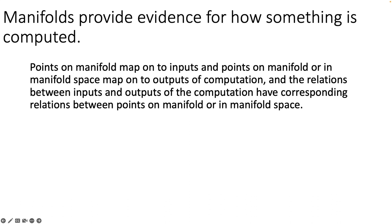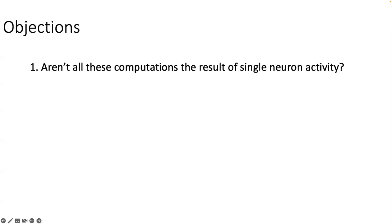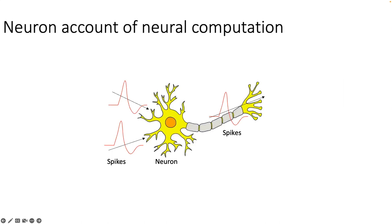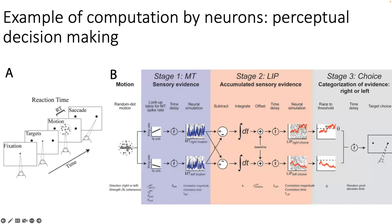Before diving deeper into homomorphisms, I want to defend this mapping as evidence for how something is computed, and address objections that reject any special role for manifolds. First, you might think these computations are merely the result of single neuron activity — that this evidence is no different from what can be gathered from understanding single neurons. On the single neuron account, input spikes from other neurons are received in the dendrites, transformed by the cell body into output spikes, and transmitted down the axon. This account appears in countless studies in cognitive neurobiology, and I don't want to impugn it.